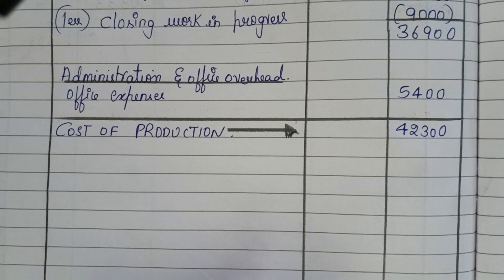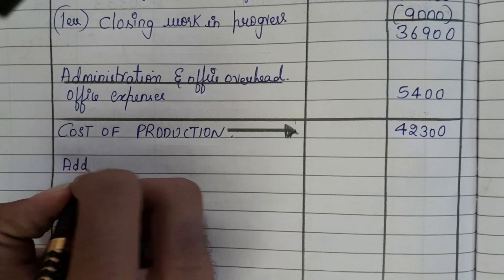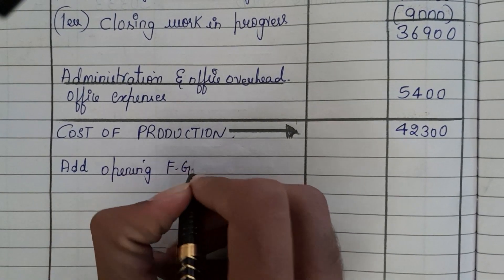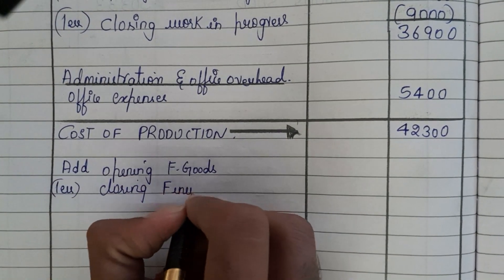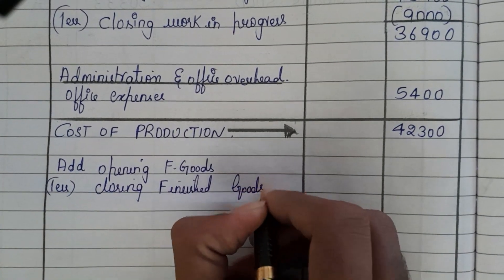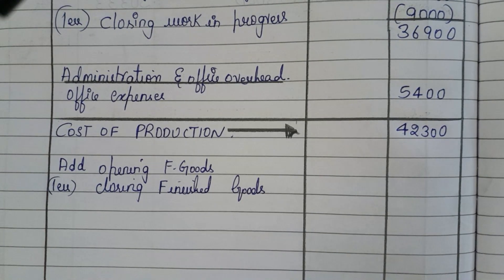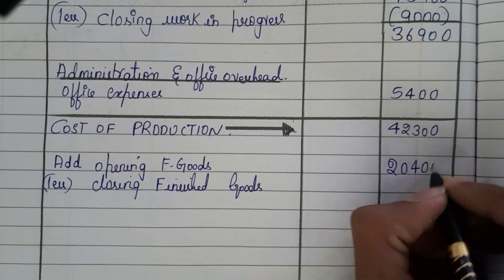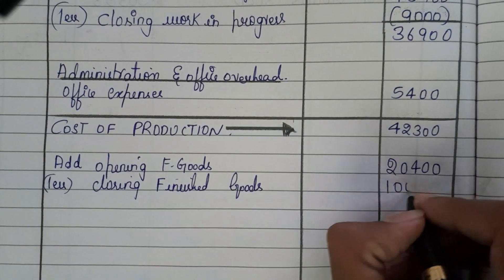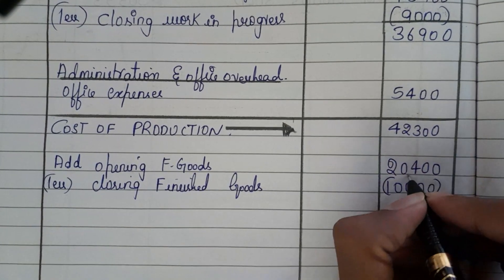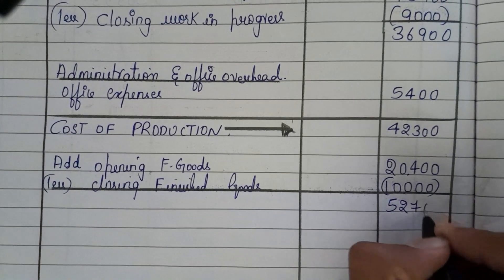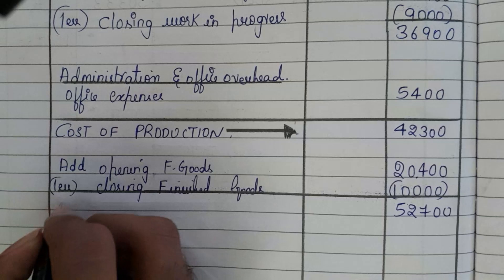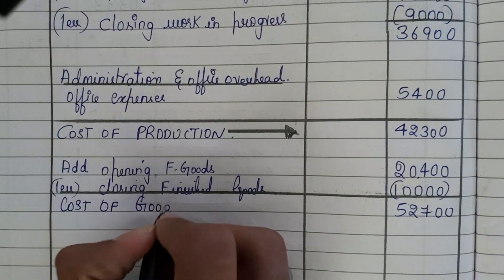The next step is to add opening finished goods and subtract closing finished goods. Opening finished goods is 20,400 and closing finished goods is 10,000. So 42,300 plus 20,400 minus 10,000 gives us 52,700, which is cost of goods sold.